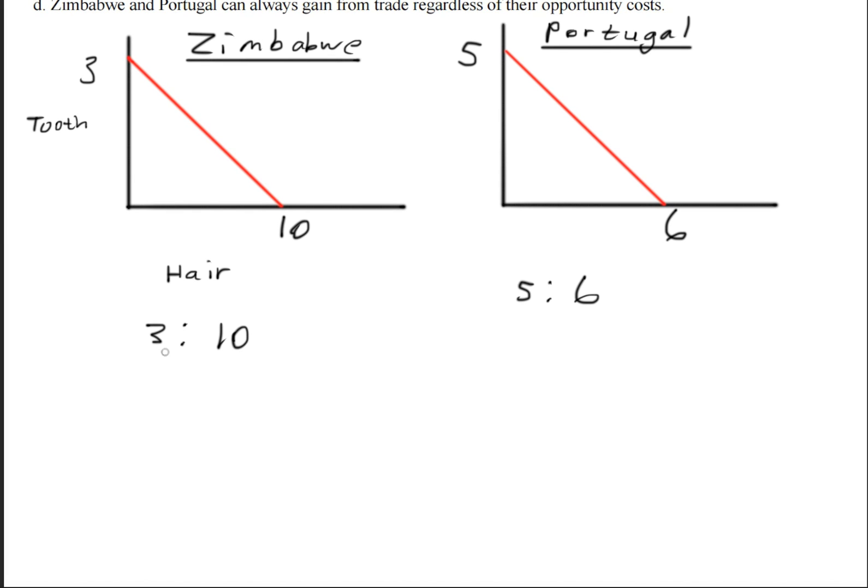So we will compare the hairbrushes first. And to do that, we divide both sides by three. This gives us one, and this will give us three point three. Over here, we divide by five on both sides. This will give us one, and this will give us one point two. Now notice here that these cancel out, so that when we get one here, we are going to compare these two values. And we can see here that this is much greater than one point two. So this value belongs to Zimbabwe. So Zimbabwe has a comparative advantage for the hairbrushes.